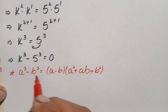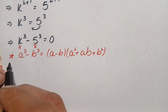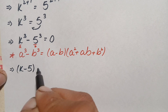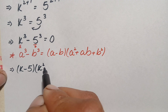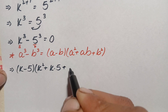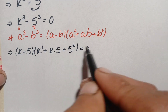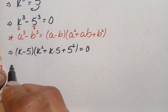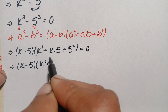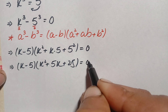Using this cubic identity, here a is k and b is 5. So this equation becomes (a minus b), which is (k minus 5), times (a squared plus a times b plus b squared), which becomes k squared plus k times 5 plus 5 squared. Simplifying, this gives (k minus 5) times (k squared plus 5k plus 25) is equal to 0.